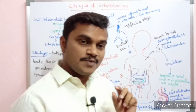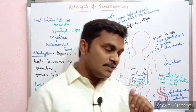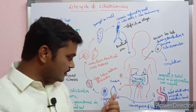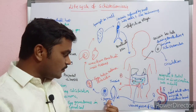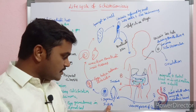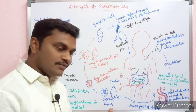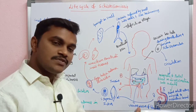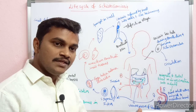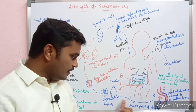One species is Schistosoma haematobium. Another species is Schistosoma japonicum, which is found in feces. In the urinary bladder, it is called Schistosoma haematobium.